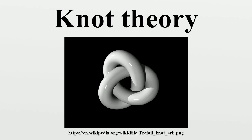A knot invariant is a quantity that is the same for equivalent knots. For example, if the invariant is computed from a knot diagram, it should give the same value for two knot diagrams representing equivalent knots. An invariant may take the same value on two different knots, so by itself may be incapable of distinguishing all knots. An elementary invariant is tricolorability. Classical knot invariants include the knot group — the fundamental group of the knot complement — and the Alexander polynomial, which can be computed from the Alexander invariant, a module constructed from the infinite cyclic cover of the knot complement. In the late 20th century, invariants such as quantum knot polynomials, Vassiliev invariants, and hyperbolic invariants were discovered.